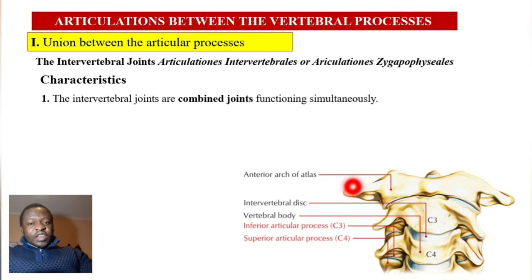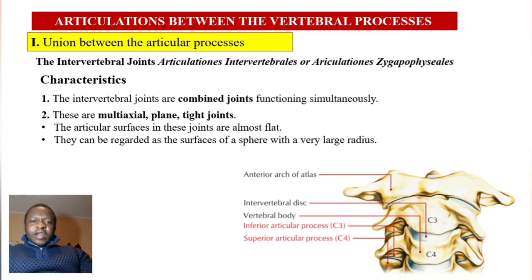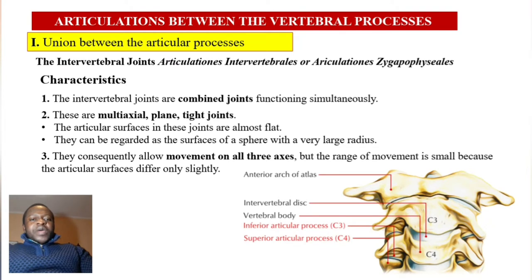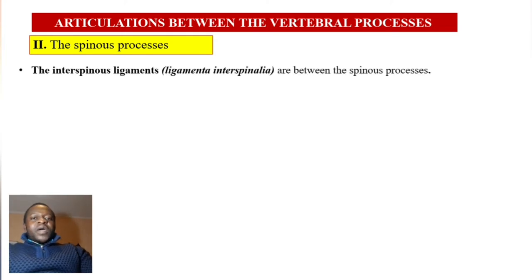The intervertebral joints are combined joints because they function simultaneously — the right and left function together. These are multiaxial plane joints. The articular surfaces are almost flat and can be regarded as surfaces of a sphere with a very large radius. They consequently allow movement in all three axes, but the range of movement is small because the articular surfaces differ only slightly.